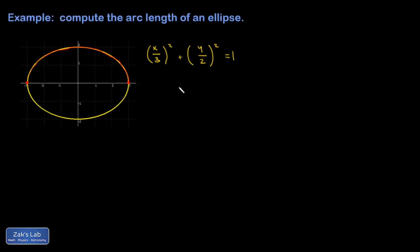So I have y over 2 quantity squared is 1 minus x over 3 squared, which is x squared over 9. And I take the square root of both sides and I get y over 2 equals the square root of 1 minus x squared over 9. And I multiply by 2 on both sides and I get y equals 2 square root of 1 minus x squared over 9.